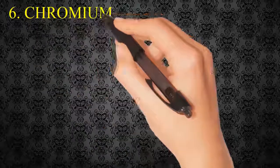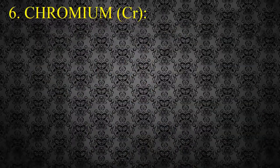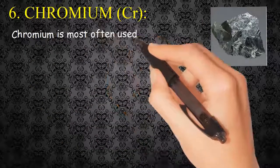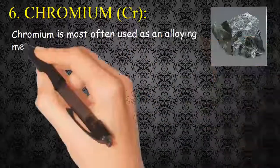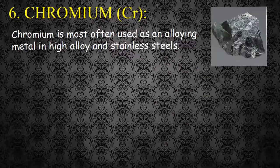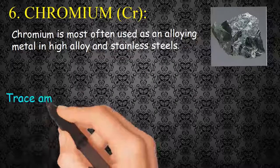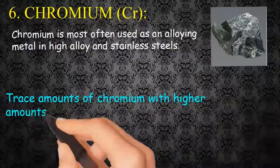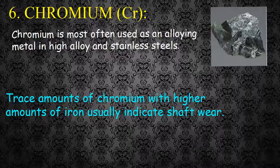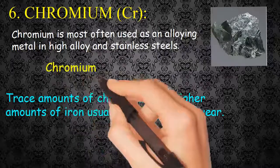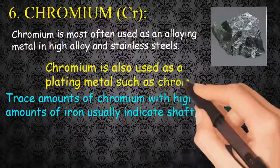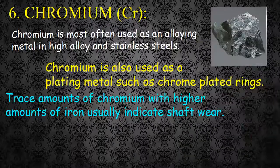Chromium (Cr). Chromium is most often used as an alloying metal in high alloy and stainless steels. Trace amounts of chromium with higher amounts of iron usually indicates shaft wear. Chromium is also used as a plating metal, such as chrome-plated rings.